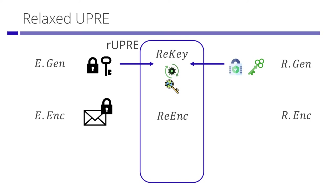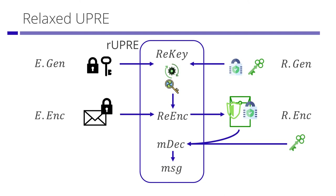We can consider a relaxed version of UPRE. The difference is that a re-encrypted ciphertext is not in the ciphertext space of the delegatee's scheme. So, we need a modified decryption algorithm in relaxed UPRE. Although we cannot use the original decryption algorithm of the delegatee, we can use the original decryption key of the delegatee's scheme. This is relaxed UPRE.